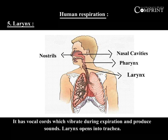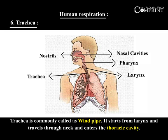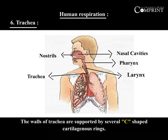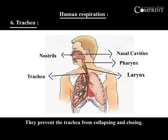Larynx opens into the trachea. Trachea is commonly called the windpipe. It starts from the larynx and travels through the neck and enters the thoracic cavity. The walls of the trachea are supported by several C-shaped cartilaginous rings, which prevent the trachea from collapsing and closing.